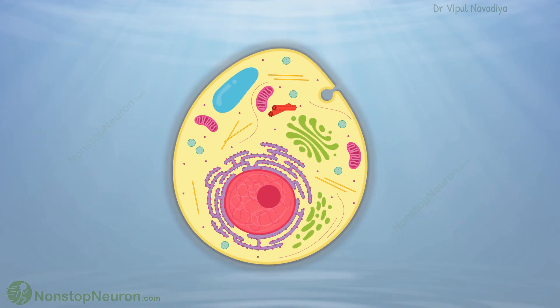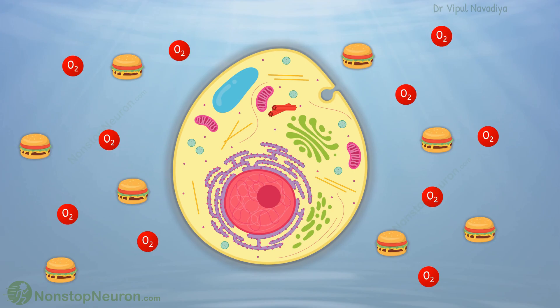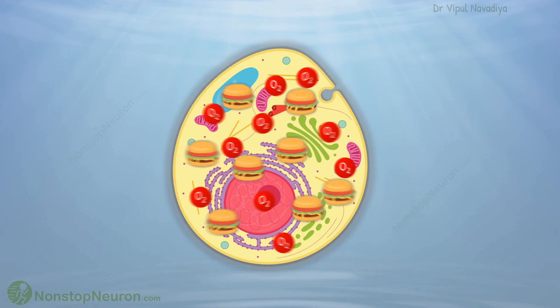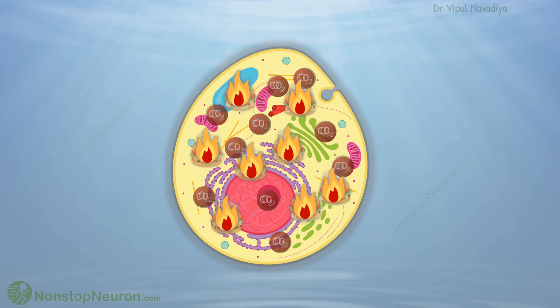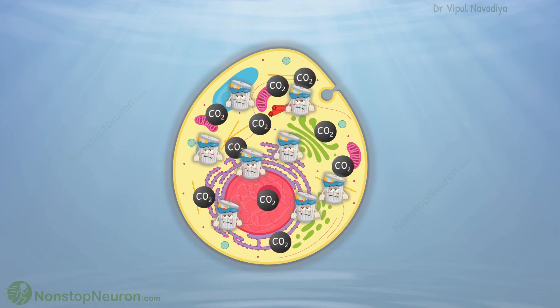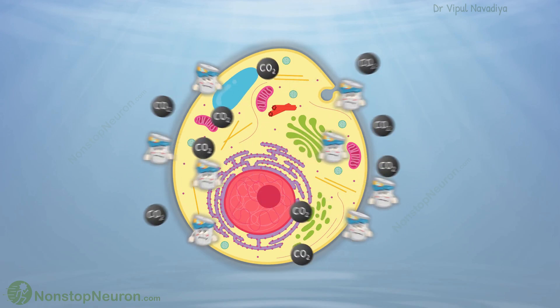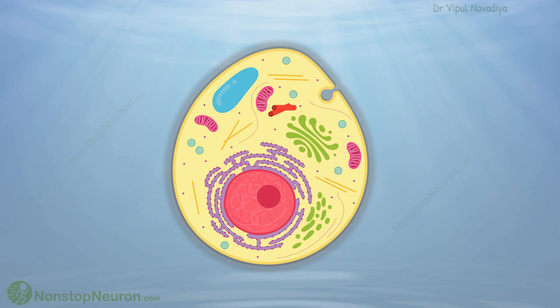Life started as a unicellular organism. In this form, it took all the nutrients like food and oxygen directly from its external surroundings. It metabolized them to use them, and then released the waste products directly back into the external environment.